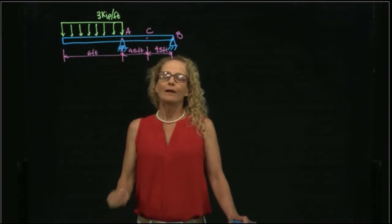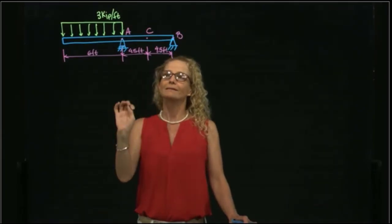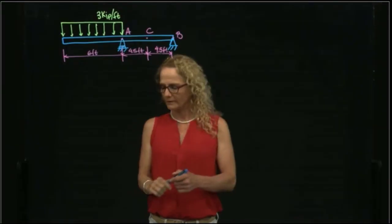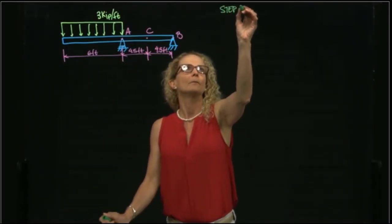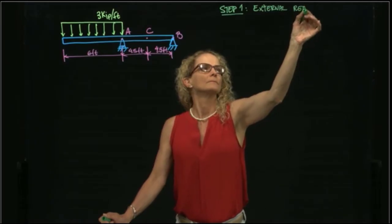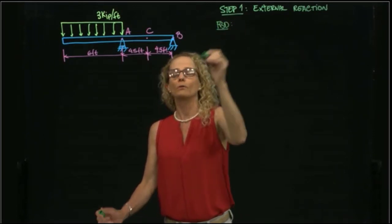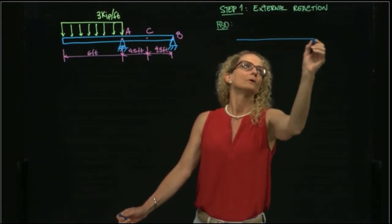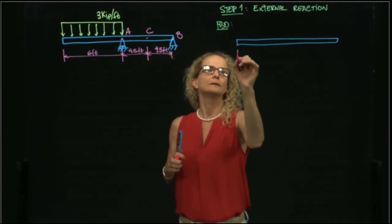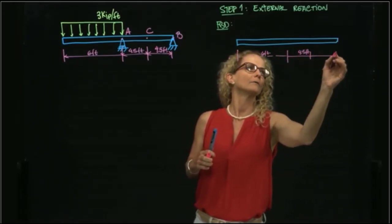The first step when we want to find the internal forces is always to find first the external forces, the external reactions. In this case, we have to find the external reactions produced by this roller at A and by this pin at B. So this is our first step, step 1, external reactions. To find the external reactions, I will do my free body diagram of the whole beam. So this is my beam, and I have at 6 feet, 4.5 feet, and 4.5 feet.